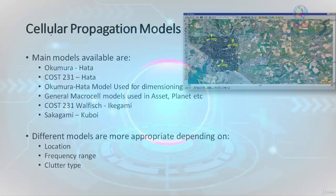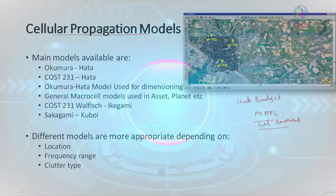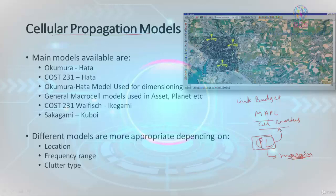First, let's understand why propagation models are required. If you've already discussed the link budget, you know how we can calculate the MAPL and the cell radius. There are very deterministic factors contributing — like BTS power, antenna gain, feeder losses, etc. In between, we have a factor called path loss. In the link budget, path loss is kept as one of the margins, similar to rain fading margins.